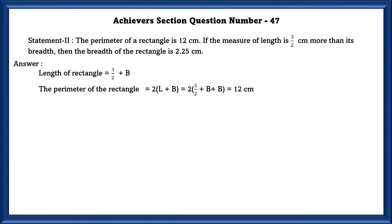Given the length of the rectangle is 3 by 2 plus B. Substituting the length of the rectangle in perimeter of the rectangle, we will get 2 into 3 by 2 plus B and there is another breadth, so plus B, which is equal to 12 centimeter which they have already given.